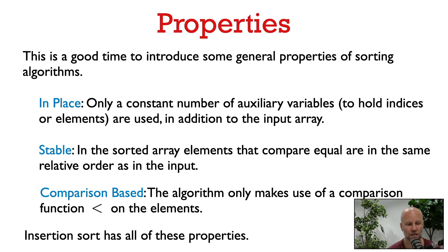A sorting algorithm is stable if in the final sorted array, elements which compare equal appear in the same relative order as in the input. So for elements that compare equal, ties are broken by the position of the elements in the original array.